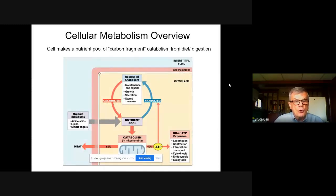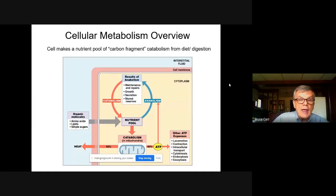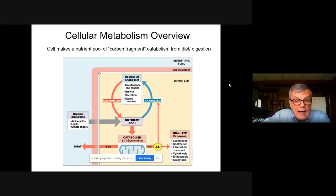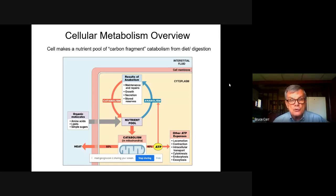This overview shows those organic molecules — called carbon fragments or monomers — incorporated into the cell, though that process is more complex than a simple arrow. Every one of those organic molecules has a transport issue; sometimes it requires energy, sometimes a cofactor to get those nutrients into the cell and into the nutrient pool. Following that arrow down leads to catabolism in the mitochondria, where about 40% of the food energy can be transferred — 60% is lost, as energy transfer is never 100% efficient.